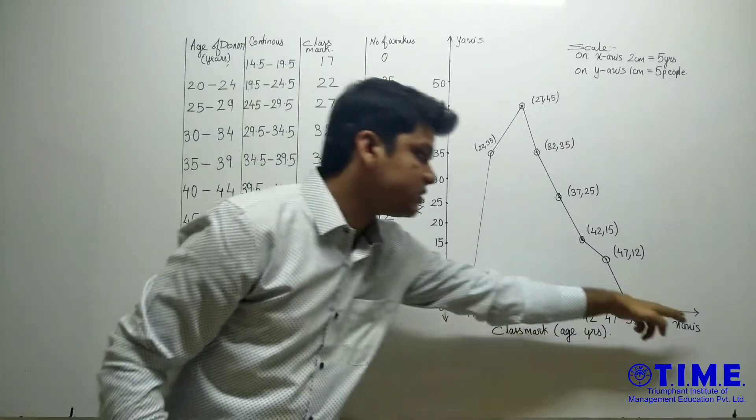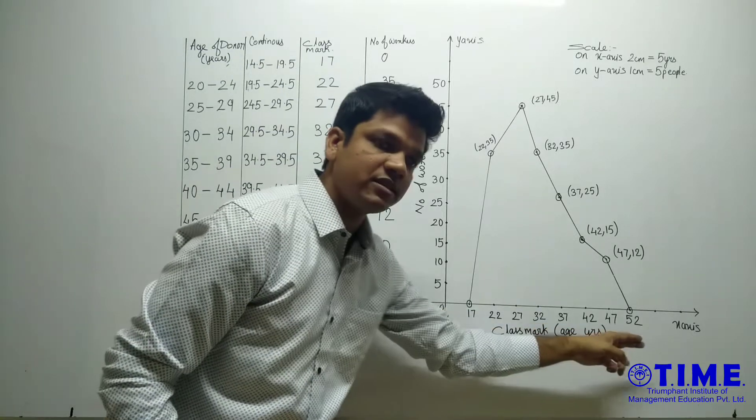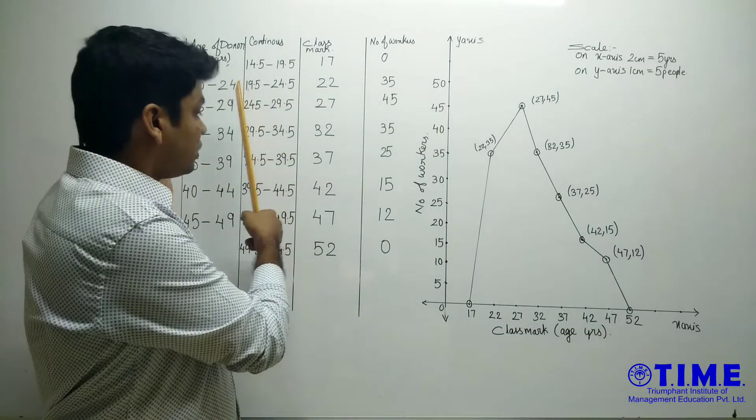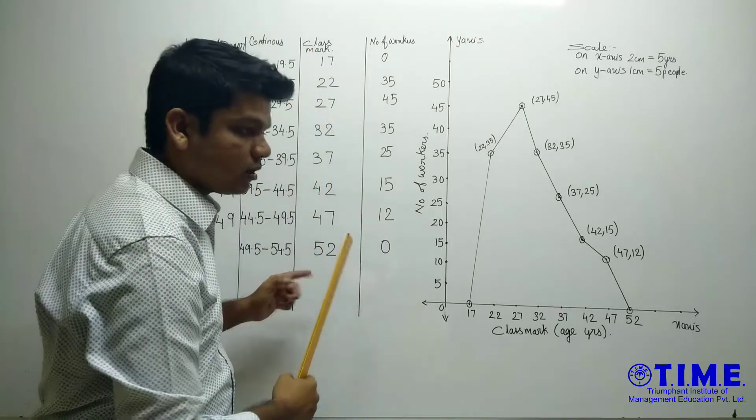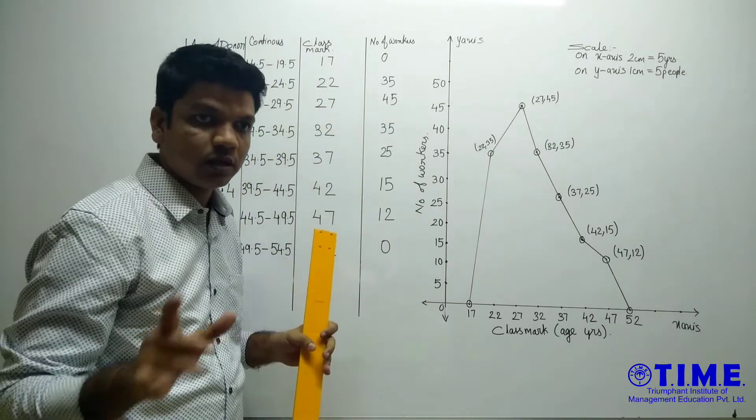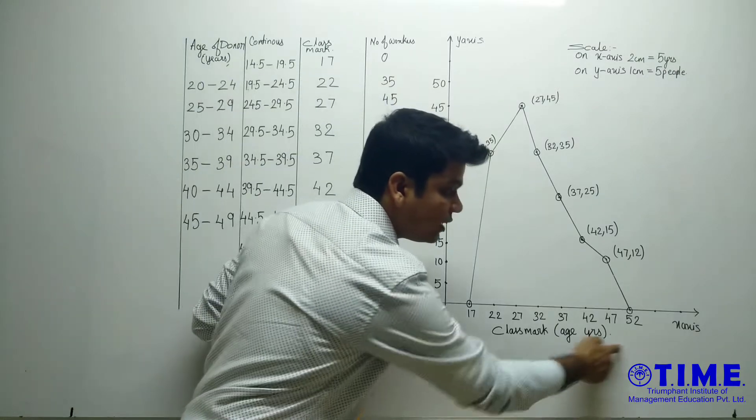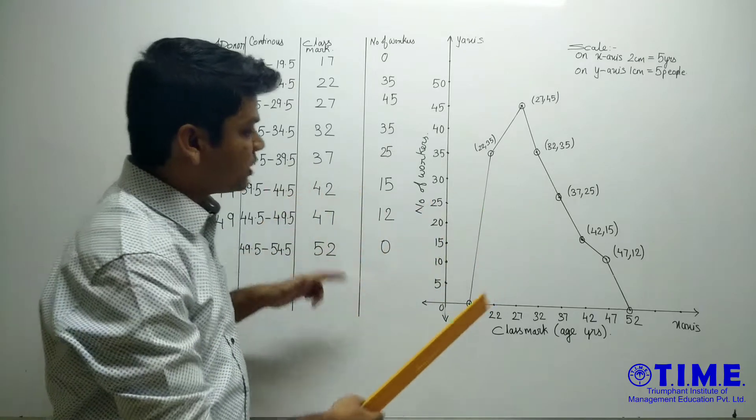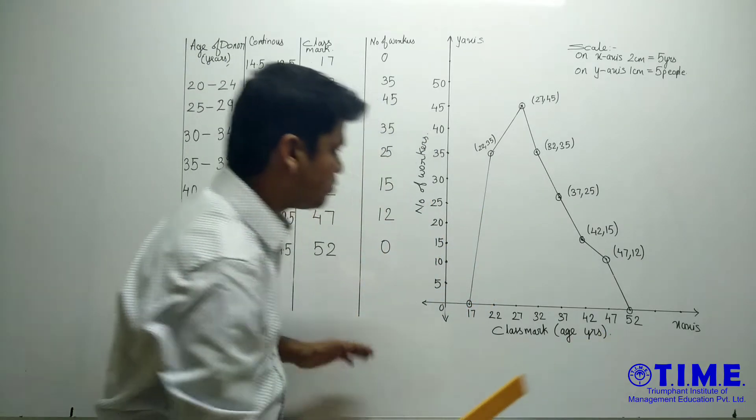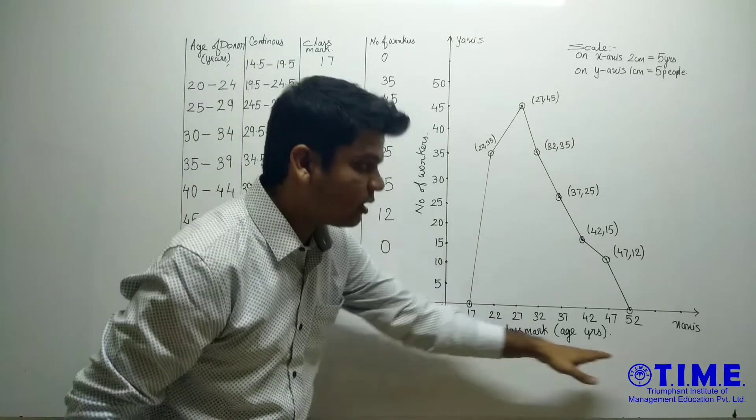Then draw an x-axis and y-axis. On x-axis, there will be no classes. There will be a class mark. This is what students do mistake. It's different from histogram. In histogram, we write classes here. And here in frequency polygon, we should write the class mark. That's why we find the class mark.